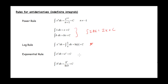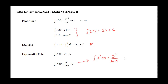We have our log rule, and then we have our exponential rules. The antiderivative of e to the x is just itself. If we have a different base for the exponential, we use the b to the x antiderivative rule — for example, 3 to the x divided by the natural log of 3, plus c.